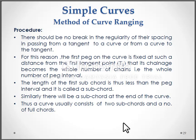The length of the first subcord is thus less than the peg interval and it is called a subcord. Similarly, there will be a subcord at the end of the curve. Thus, a curve usually consists of two subcords and a number of fullcords.